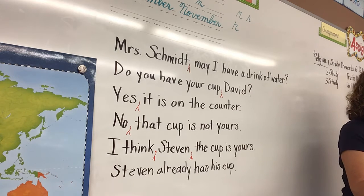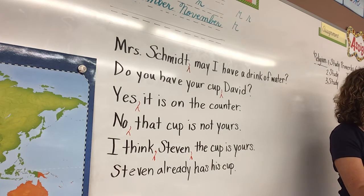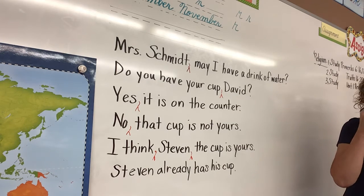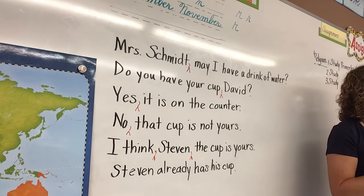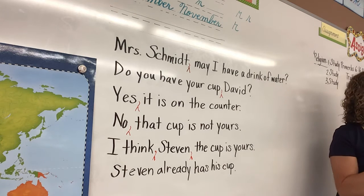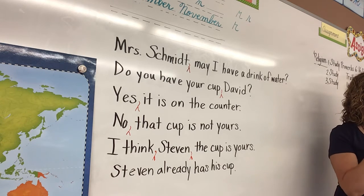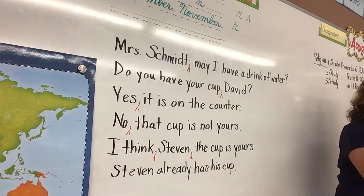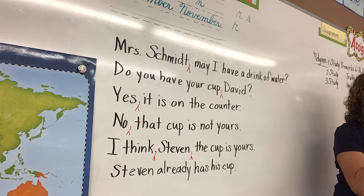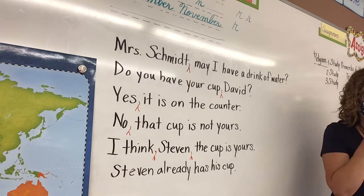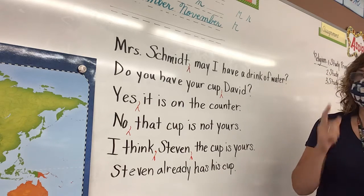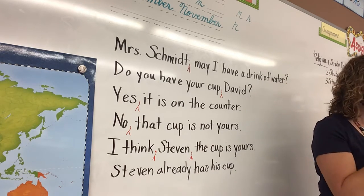Now, look at this last sentence: Stephen already has his cup. Liam? You don't have to put a comma here because you're not talking to Stephen — you're talking about Stephen. Very good. That is what I was hoping you guys would realize. You only put the commas when you're talking to a person. That's direct address.